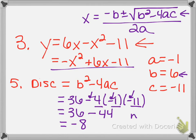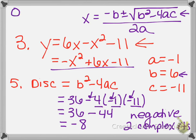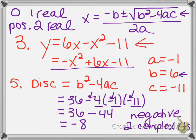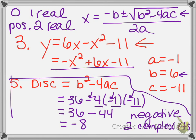Since this is a negative number, that means I'm going to have two complex roots. When your discriminant is negative, you have two complex numbers because you'd be taking the square root of a negative in the quadratic formula. When the discriminant is zero, you have one real root. When it's positive, you have two real roots. That's all you had to do on number 5 — just the discriminant and the number and type of solutions.